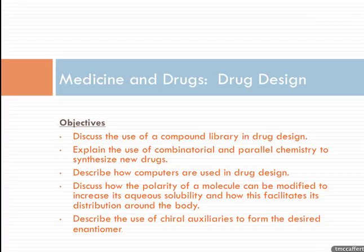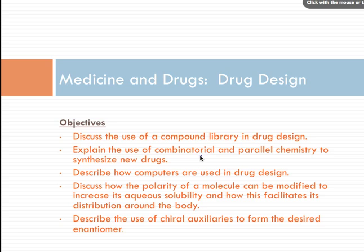This screencast is going to talk about drug design. The objectives we want to focus on are describing the use of a compound library in drug design, explaining the use of combinatorial and parallel chemistry to synthesize new drugs, describing how computers are used in drug design, how the polarity of a molecule can be modified to increase aqueous solubility and facilitate its distribution around the body, and describing the use of chiral auxiliaries to form the desired enantiomer.